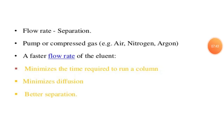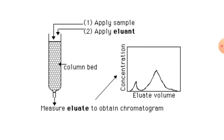Advantages of column chromatography: separation depends upon the flow rate. The pump or compressed gas used includes air, nitrogen, and argon. The flow rate of the eluent is faster, minimizing the time required to run a column. It also minimizes diffusion and gives better separation. The eluate obtained from the column can be measured by the chromatogram.